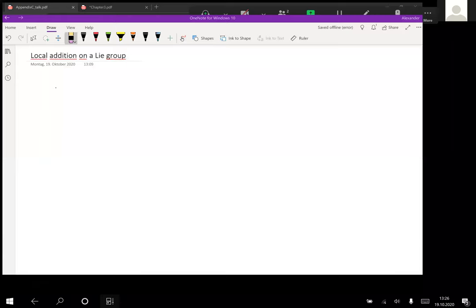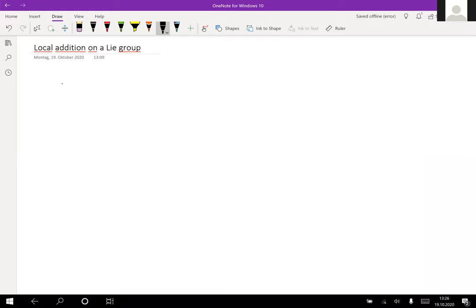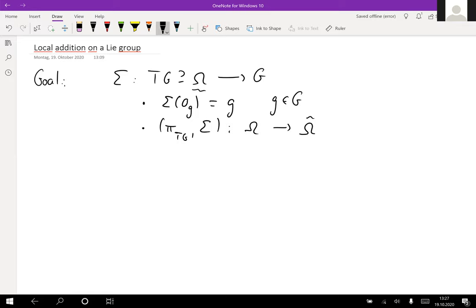Our goal is to construct sigma smooth on some open neighborhood omega from TG to G with several properties. We want that it maps zero back to the base point, and pi_TG composed with sigma should give us a diffeomorphism from omega onto omega tilde lying inside G times G.